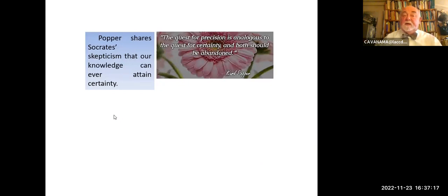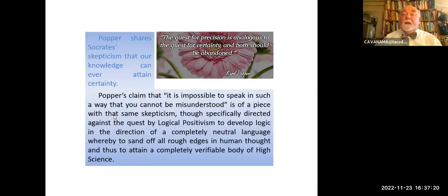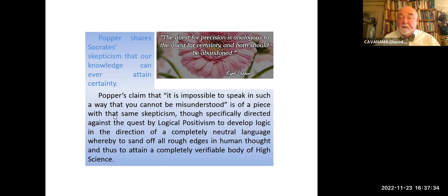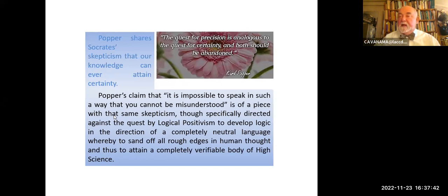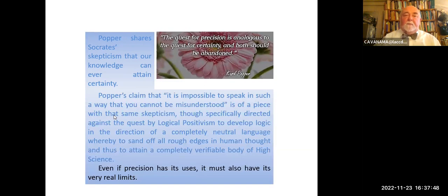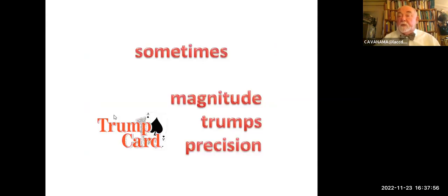Again, Popper shares Socrates' skepticism that our knowledge can never obtain certainty. Popper's claim that it is impossible to speak in such a way that you cannot be misunderstood is of a piece with that same skepticism, specifically directed against the quest by logical positivism to develop logic in the direction of a completely neutral language, whereby to sand off all the rough edges of human thought and attain a completely verifiable body of high science, capital H. But even if precision has its usage, it must also have its very real limits. Sometimes, for instance, magnitude trumps precision.